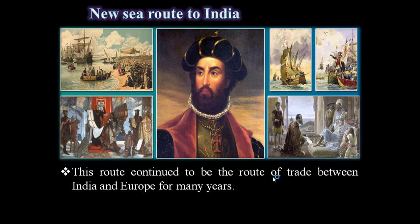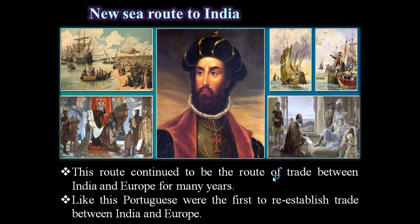What Europeans were struggling to find — an alternative sea route to India — came into existence. Portuguese were the first to re-establish trade between India and Europe, because when Constantinople was captured by the Ottoman Turks in 1453, the land and sea routes were completely closed, but the closed trade was once again re-established by the Portuguese between India and Europe.